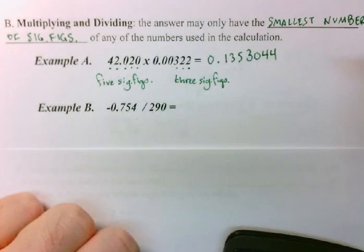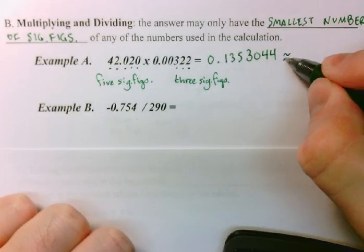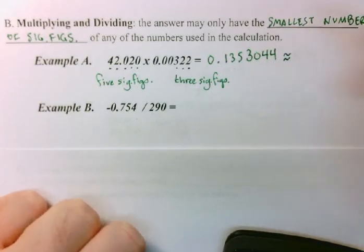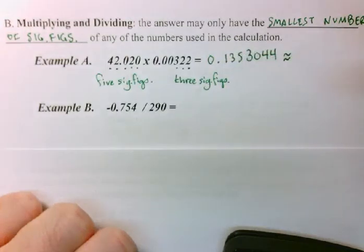But it is not the scientifically significant answer. And so, therefore, I have to apply my rule. And my rule says that my answer can only be reported to three sig figs.